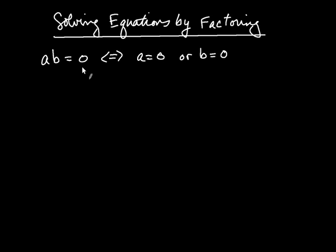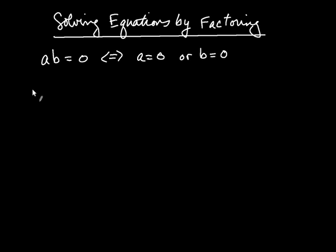A couple of things about this. First, you see how the right-hand side has to be zero? That has to be true. If it's one or five or negative two or something other than zero, then you can't use this logic. And the second thing is that the left-hand side has to be a multiplied by b. If it was a plus b or a minus b, then this won't work. So that is why we care so much about factoring — because factoring gets the left-hand side to be a product, that is a times b.